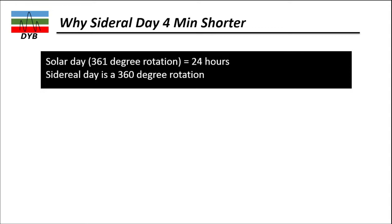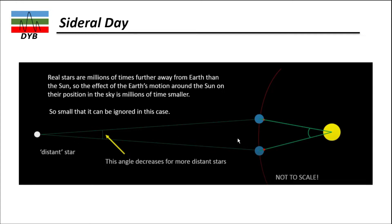Now let's look at why the sidereal day is 4 minutes shorter than the solar day. The solar day corresponds to 361 degrees of rotation, taking 24 hours. The sidereal day corresponds to only 360 degrees of rotation, because the reference star is so far away that the extra 1-degree angle can be ignored.